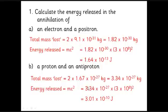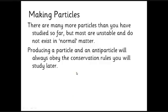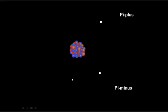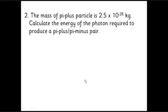To make particles, one way is to fire a high-energy photon at a nucleus. The energy turns into mass and creates two particles — for example, a π⁺ (pi-plus) and its antiparticle the π⁻ (pi-minus). These are particles called mesons. They must obey conservation laws — you can see conservation of charge: one is positive and one is negative.